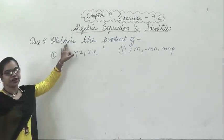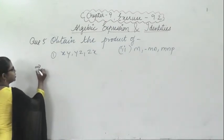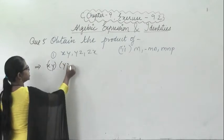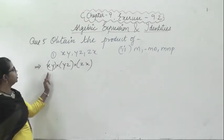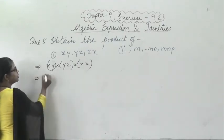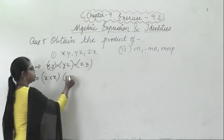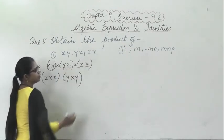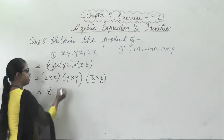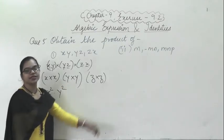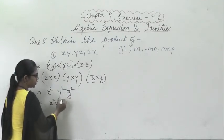In question number 5 you have to find the product — product means you have to multiply. In question 1 it is given: xy multiplied by yz multiplied by zx. I will group like terms: x into x gives x squared, y into y gives y squared, and z into z gives z squared. So the answer is x²y²z².